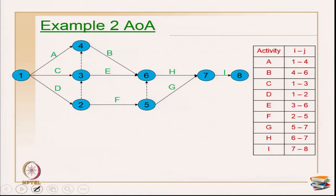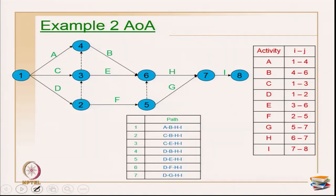Once the final network is arrived at, numbering happens: 1, 2, 3, 4, then 5 and 6 because I should always be less than J, then 7 and 8. There are 7 paths in this network: A-B-H-I, C-dummy-B-H-I, C-E-H-I, D-B-H-I, D-E-H-I, D-F-H-I, and D-F-G-I. Now the key question is which is the critical path and what is the duration for all these paths.